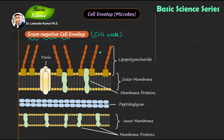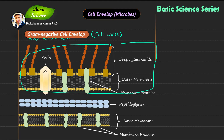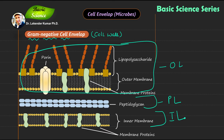So we have a multi-layered structure here. This whole section is the outer layer. Then you have the peptidoglycan layer. And then you have the inner layer. So the gram-negative cell wall is divided into three layers — it's typically a three-layered structure. You have the outer layer, then the peptidoglycan layer, and then the inner layer.